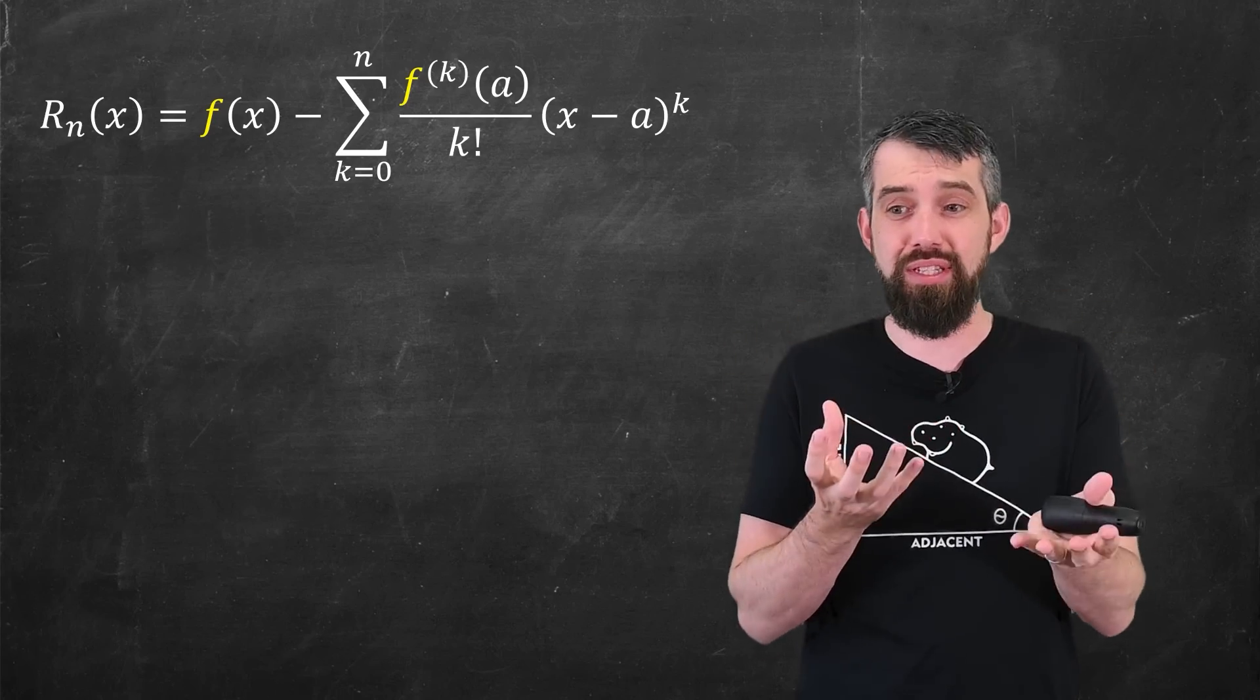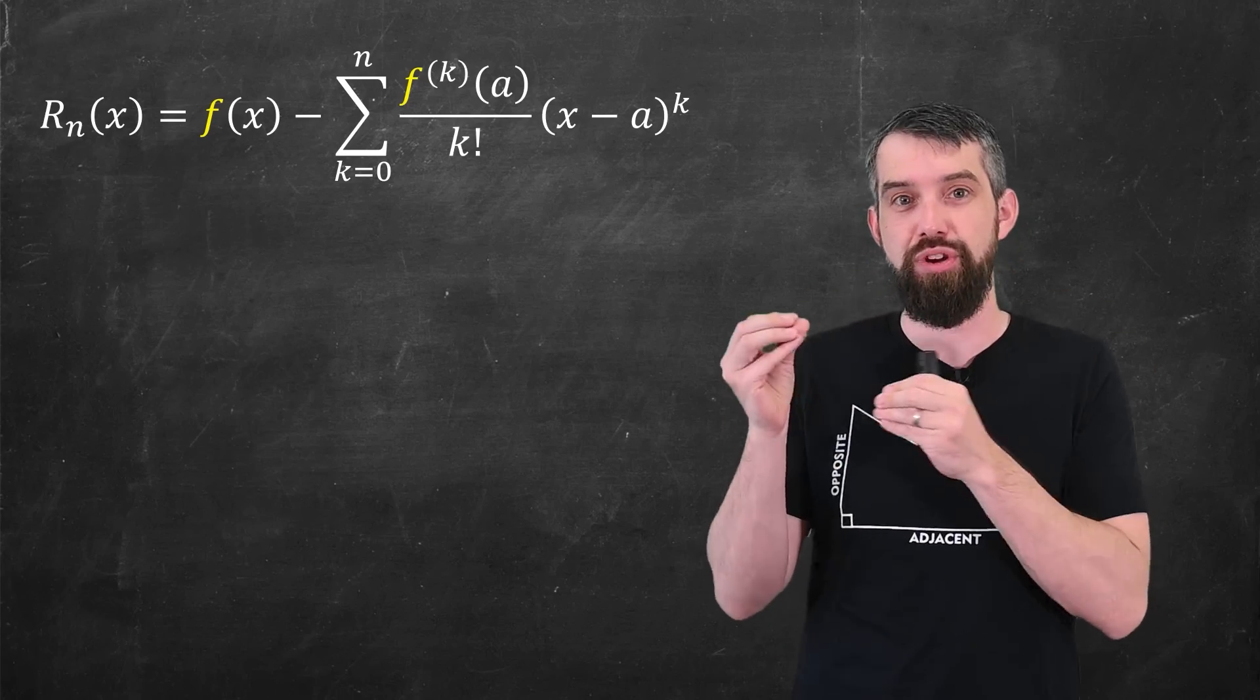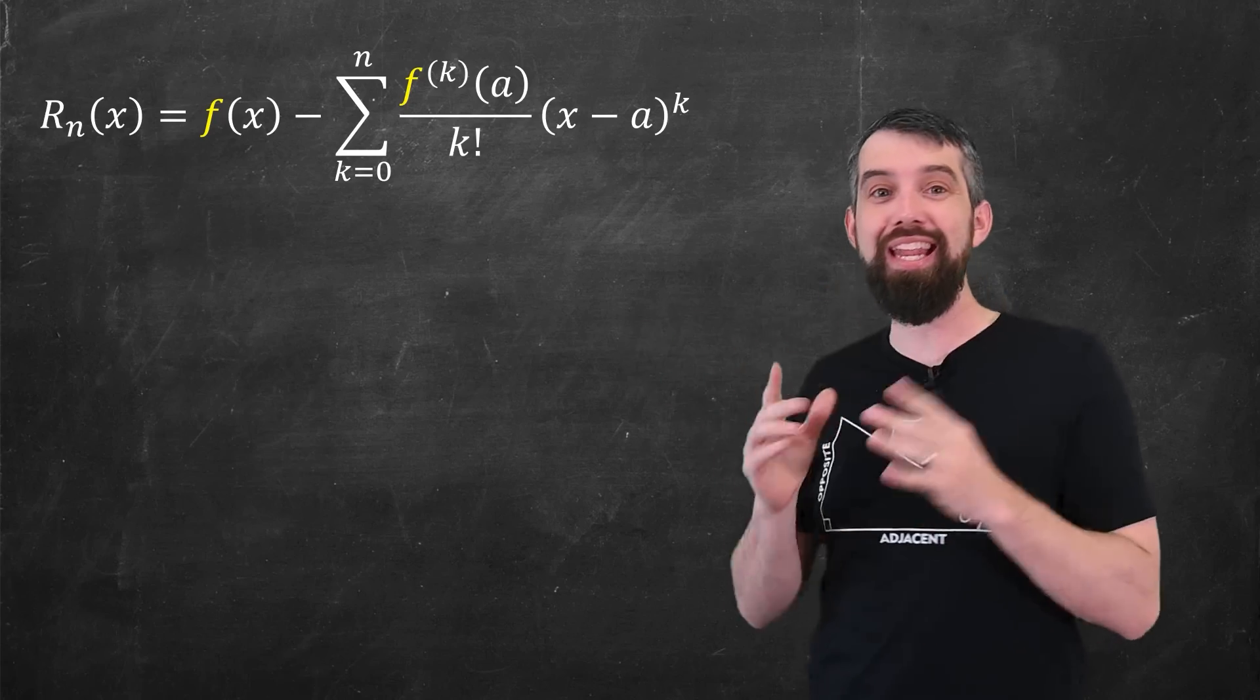And the remainder is just defined to be the difference between the function and the Taylor polynomial of nth degree. So all is defined. Rn is that difference.